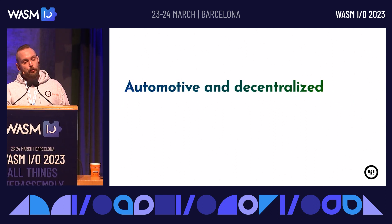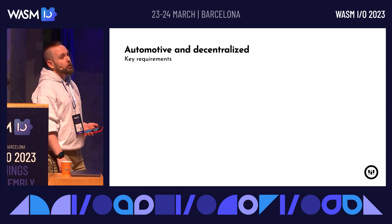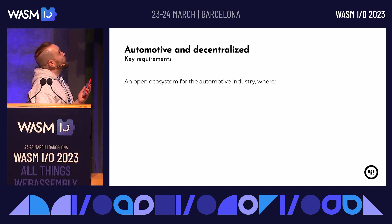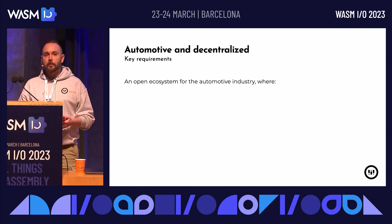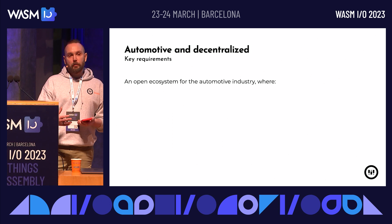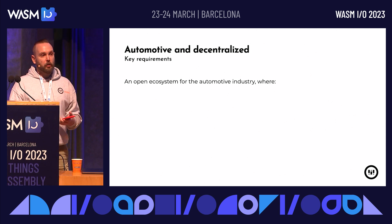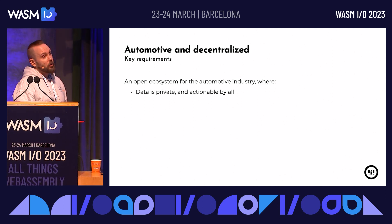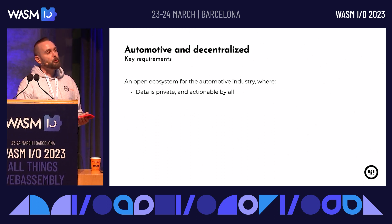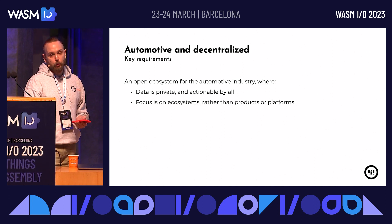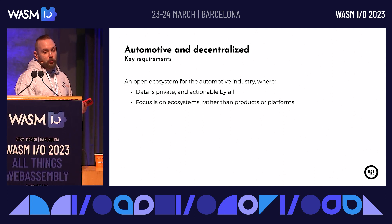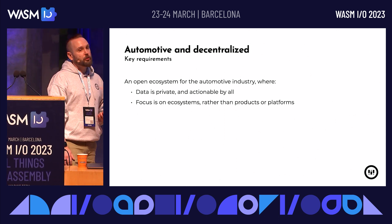The next use case is automotive. We worked with Polestar on a decentralized Web3 project. They wanted to build an open ecosystem — not a product or platform — where a service provider for cars could integrate without any direct conversation with Polestar or even with competitors. The data is always private but actionable by all. We used the blockchain as an event system with smart contracts. The focus was on ecosystems where anybody in the industry could operate.